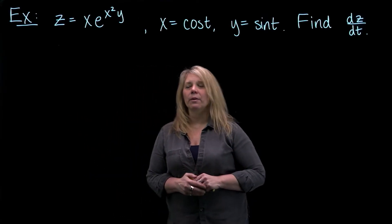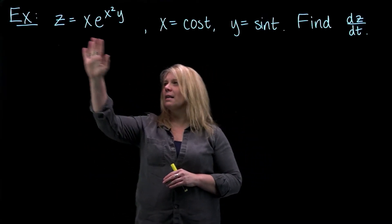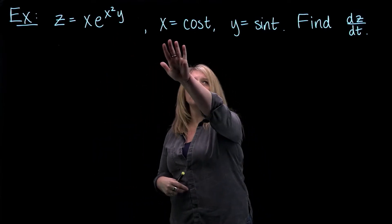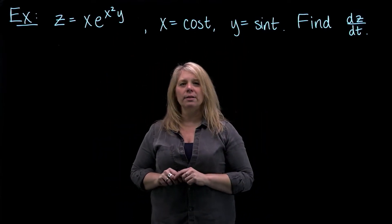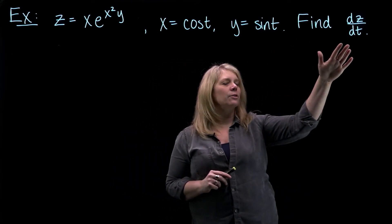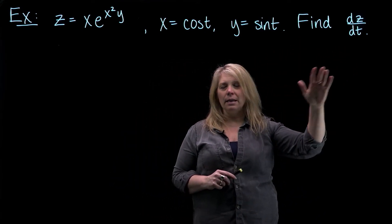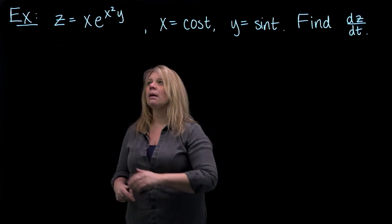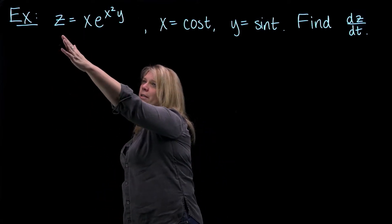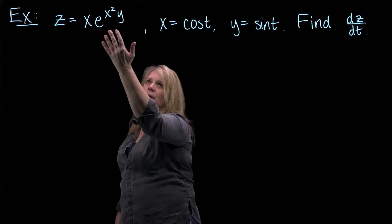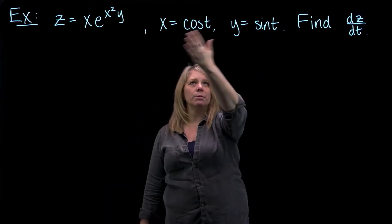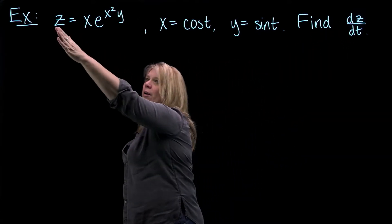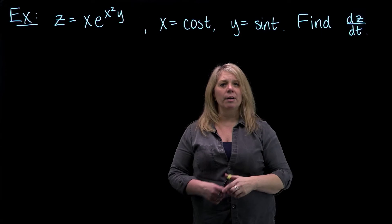We're going to look at an example here. We've got z as a function of x and y, and both x and y given as functions of t, and we're asked to find dz/dt. So this is a typical chain rule problem, even if it doesn't say chain rule in the problem. The idea is that you have one function defined in terms of some variables, and those variables defined in terms of some other variables, and you want the derivative of the initial variable with respect to one of these terminal variables.